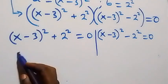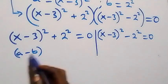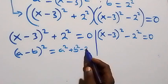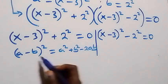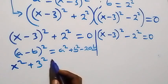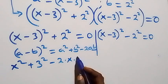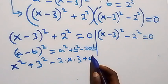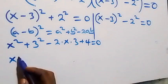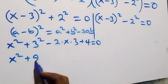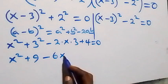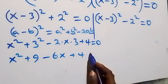For case one, we expand (x minus 3) squared using the identity (a minus b)^2 = a^2 + b^2 minus 2ab. This gives x squared plus 9 minus 6x, then plus 4, equals 0. So we have x squared plus 9 minus 6x plus 4 equals 0.